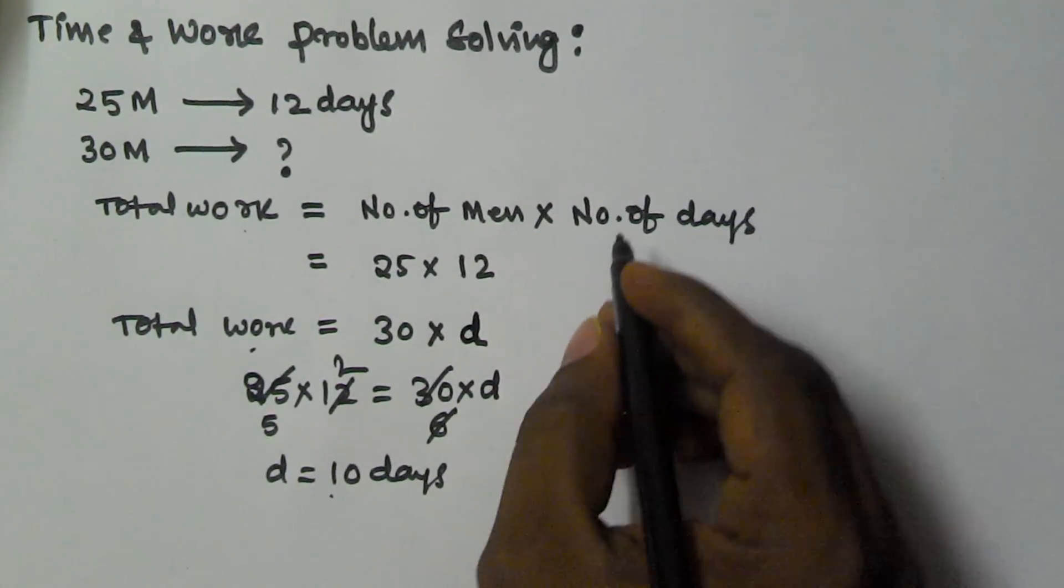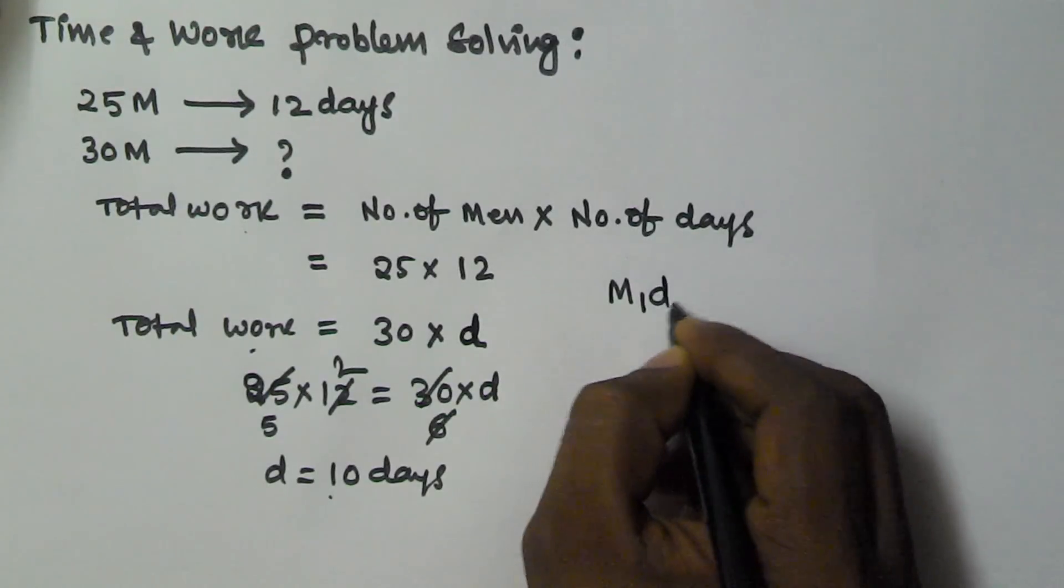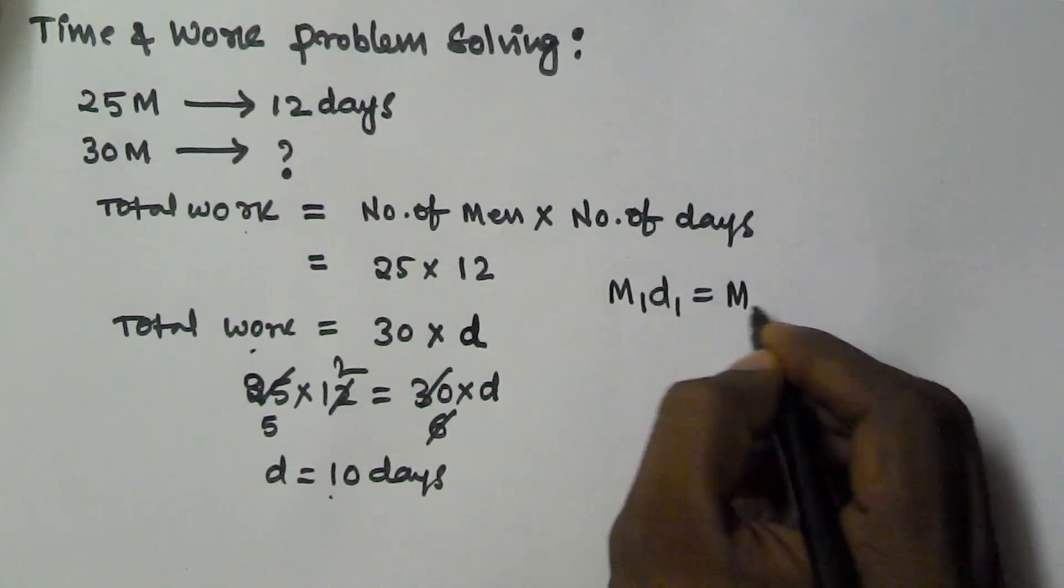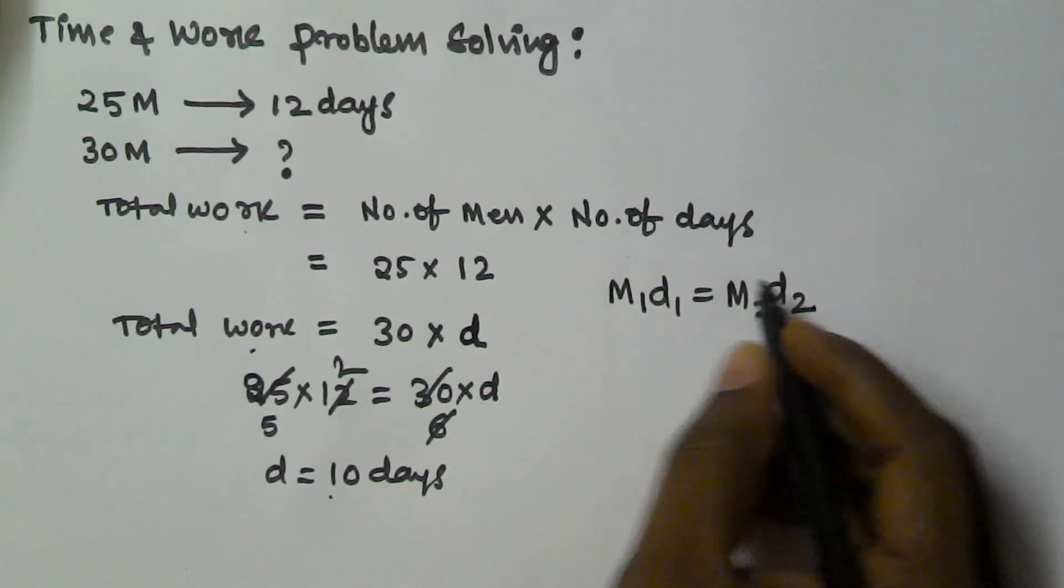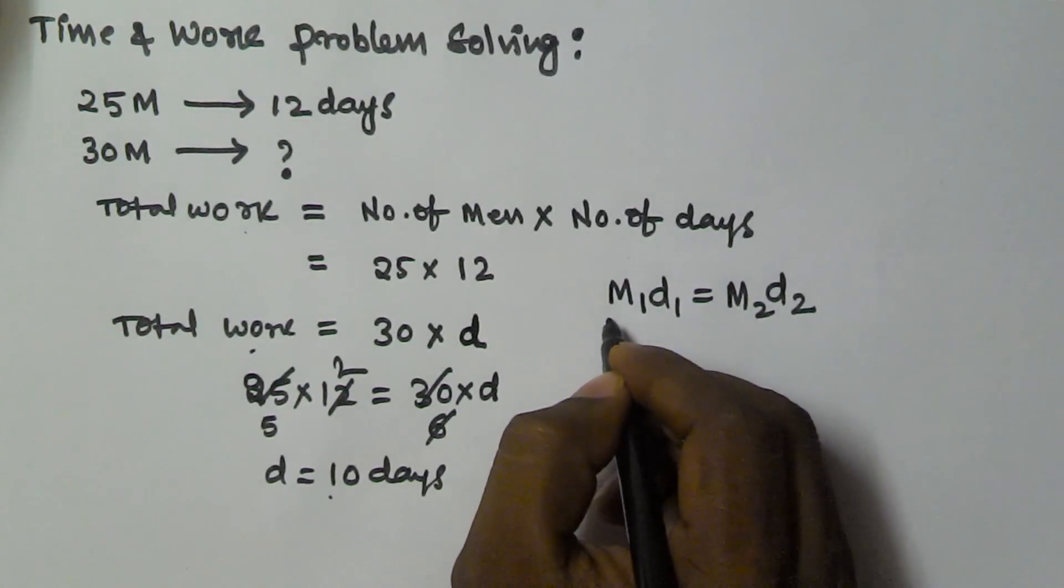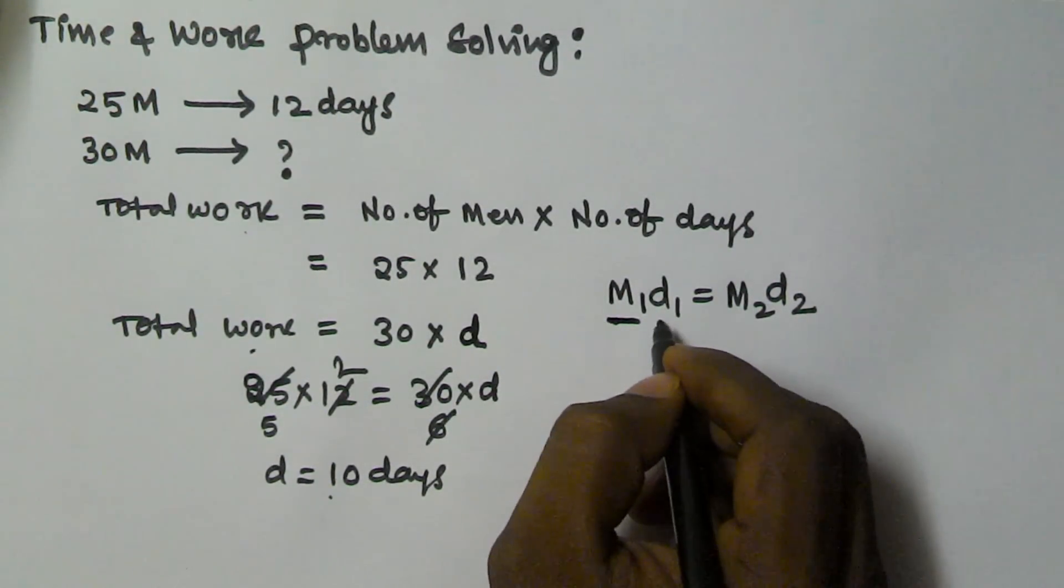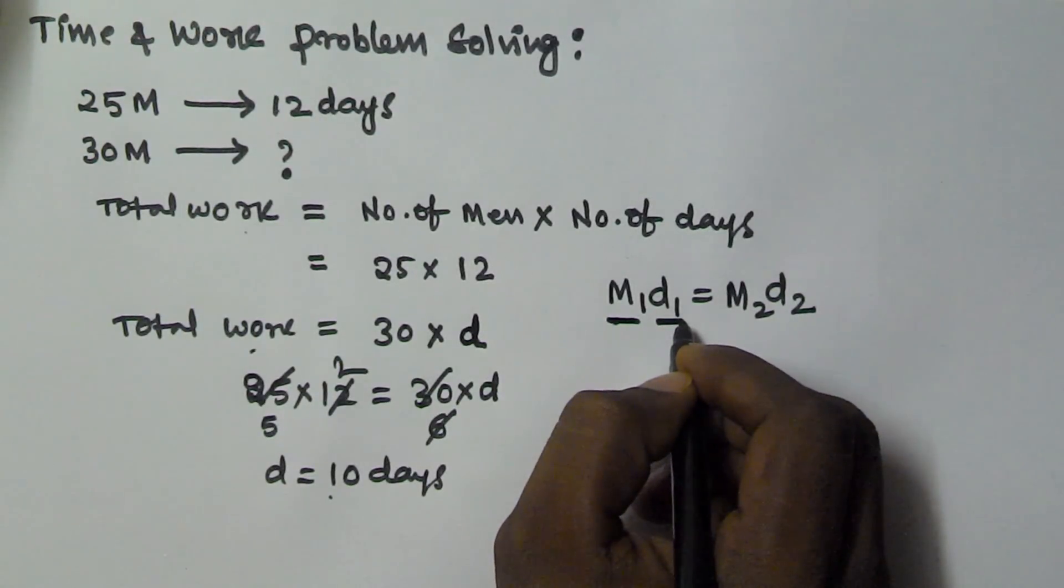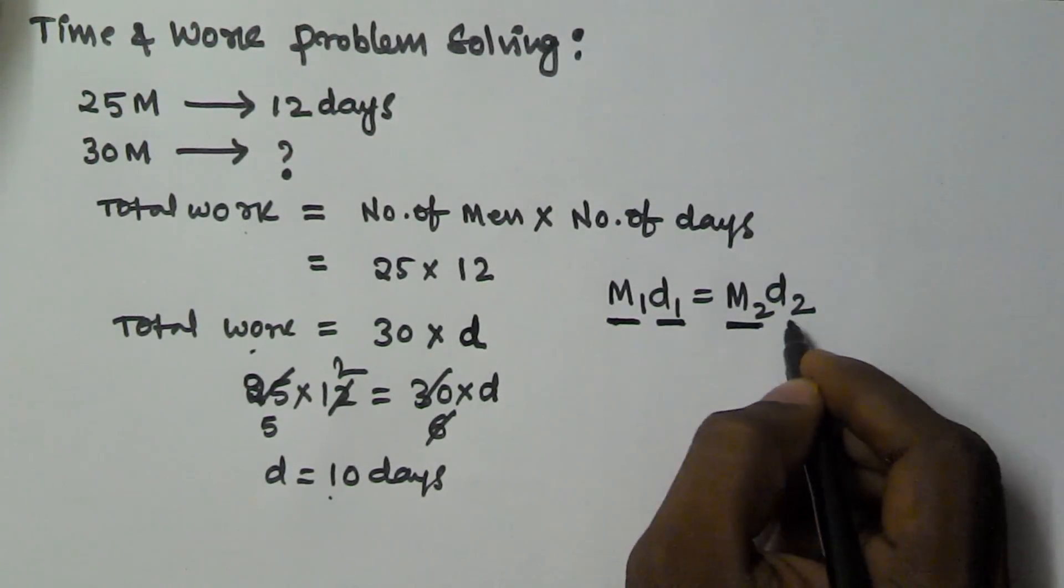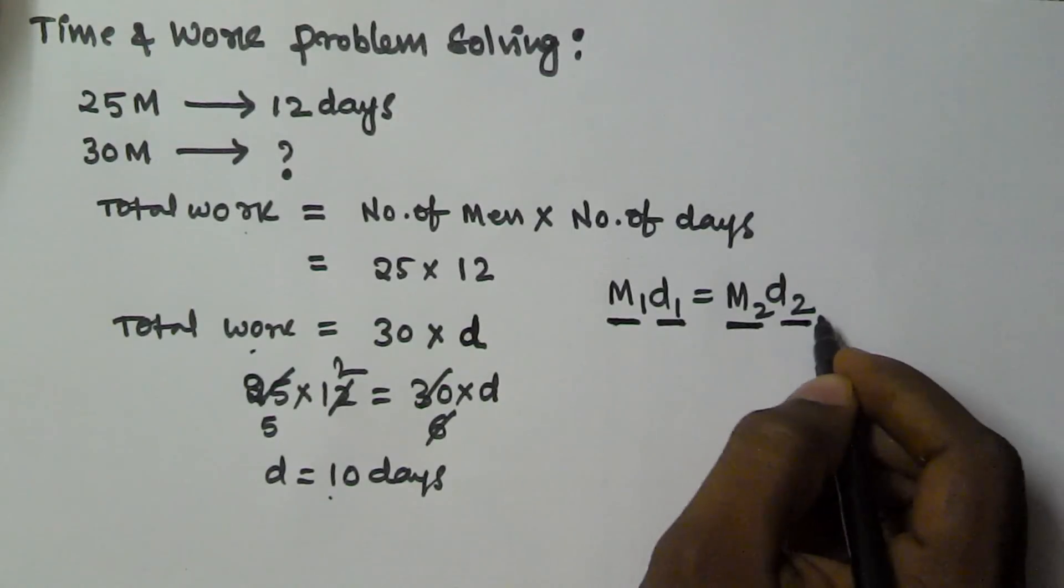In general, we can write this as M1D1 equals M2D2. In the first case, M1 represents the number of men taking D1 days, and M2 men take D2 days to finish the same work.